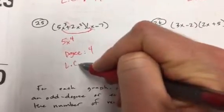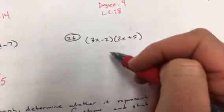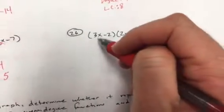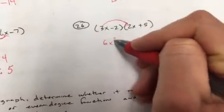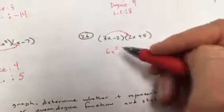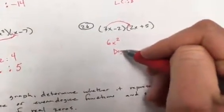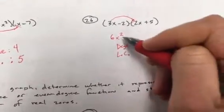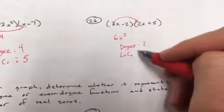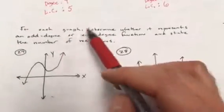Same thing here — highest power times highest power gives you 6x squared. We don't really care about anything else. The degree is going to be 2 and the leading coefficient is 6.